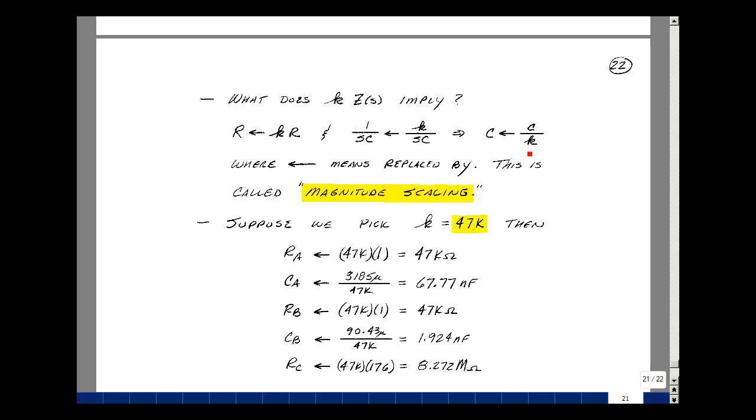For the capacitor, multiplying by scale factor k makes the capacitor k times smaller. That would make the 3,185 microfarad capacitor become 67.77 nanofarads, and the 90.43 microfarad capacitor becomes 1.924 nanofarads. I can't get exactly these values of capacitance and resistance, but try to come as close as you can. This circuit's not that critical to component values.